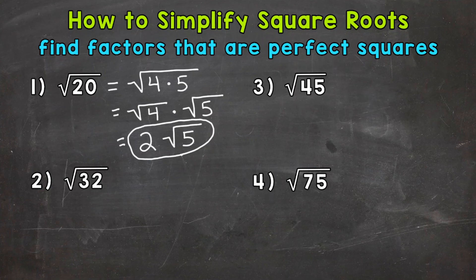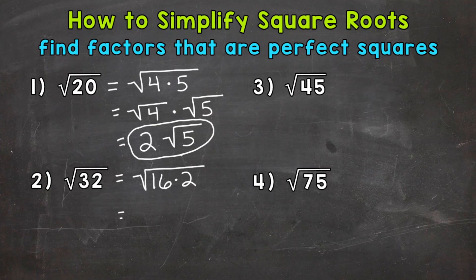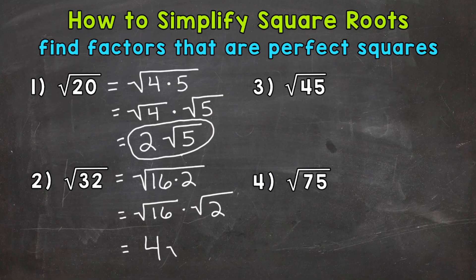Let's move on to number 2, where we have the square root of 32. We need to think: are there any factors of 32 that are perfect squares? We know that 16 times 2 equals 32, and 16 is a perfect square, so we can simplify. The square root of 32 equals the square root of 16 times 2. Let's split this: the square root of 16 times the square root of 2. The square root of 16 is 4. So we end up with 4 times the square root of 2, or 4 square root 2, or even 4 root 2.